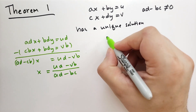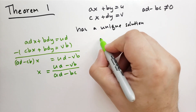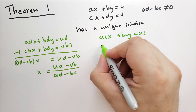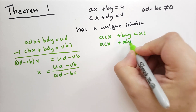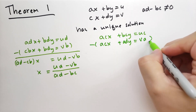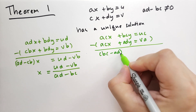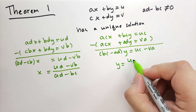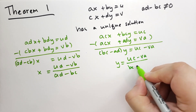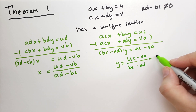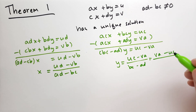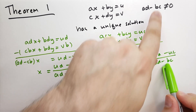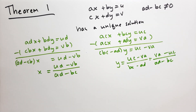For Y, we multiply the top equation by C, giving ACX + BCY = UC, and the bottom by A, giving ACX + ADY = VA. Subtracting the second from the first gives (BC minus AD)Y = UC minus VA, so Y equals (UC minus VA) over (BC minus AD). Multiplying top and bottom by -1 gives Y = (VA minus UC) over (AD minus BC). Since AD minus BC is not zero, we have a unique solution for both X and Y.